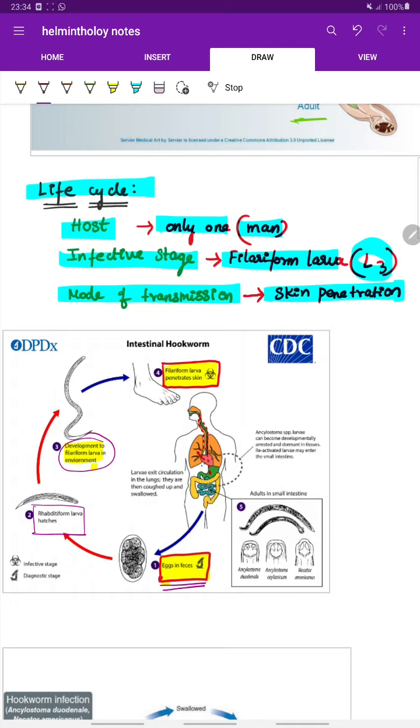The filetiform larva is the infective stage again to the human. The filetiform larva penetrates the skin, and the larva exits circulation in the lungs, they are then coughed up and swallowed. Ankylostoma species larvae can become developmentally arrested and dormant in the tissues. Reactivation may enter the small intestine, where will be the adult worm.